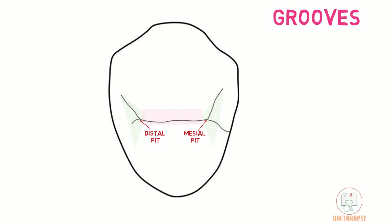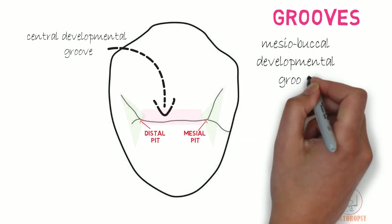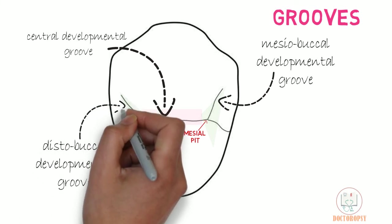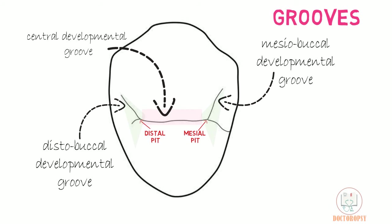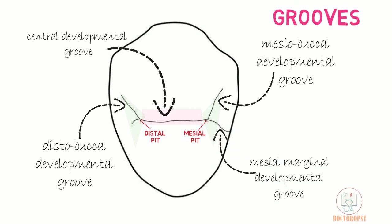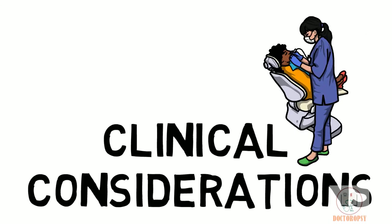All four developmental grooves are seen from the occlusal aspect: a central developmental groove running mesiodistally from the mesial pit to the distal pit; a mesiobuccal developmental groove running buccally from the mesial pit; a distobuccal developmental groove running buccally from the distal pit; and the occlusal part of the mesial marginal developmental groove originating from the mesial pit and running across the mesial marginal ridge. The rest of the occlusal surface is smooth with no supplemental grooves.